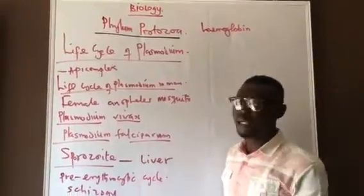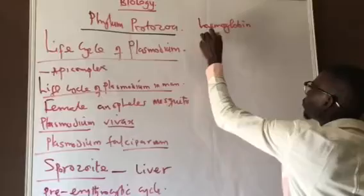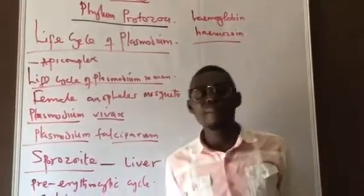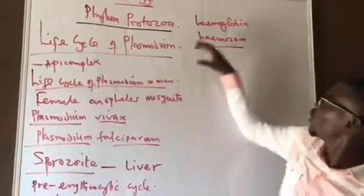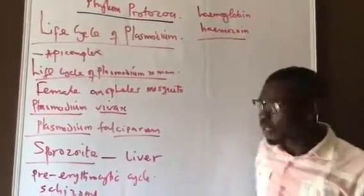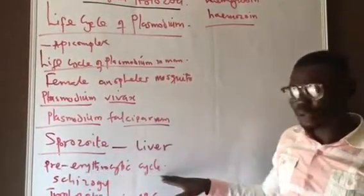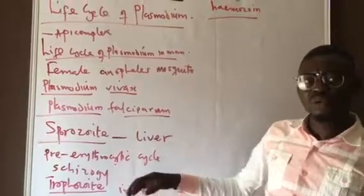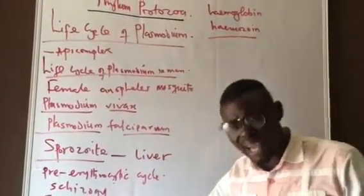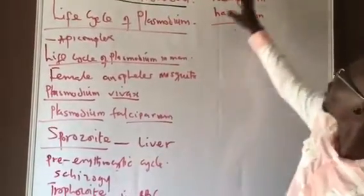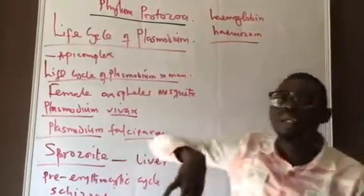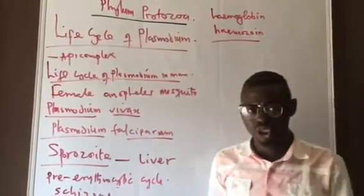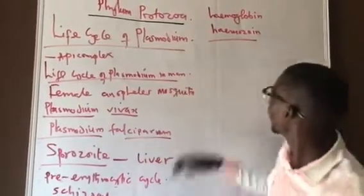When merozoites produce numerous offspring, they release hemozoin — a dark brown insoluble substance. They burst open the red blood cells and release this content into the blood. There is an incubation period in the pre-erythrocytic cycle lasting about seven days before entering the erythrocytic cycle. When hemozoin is released into the blood, that is when we start feeling feverish — the chills and fever condition occurs at this point.